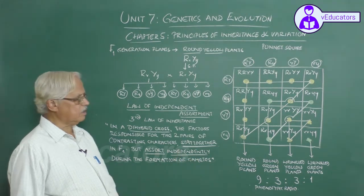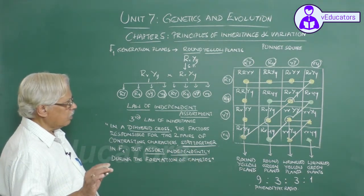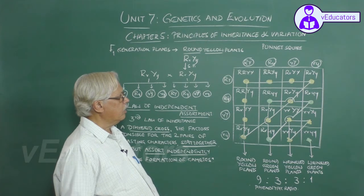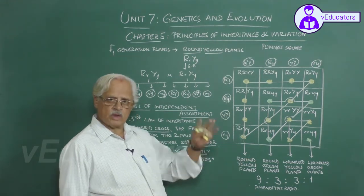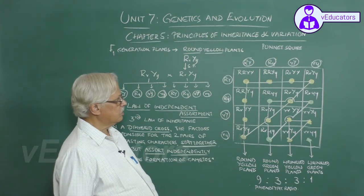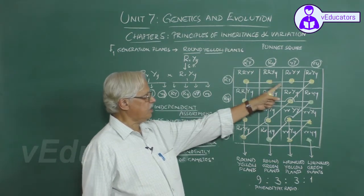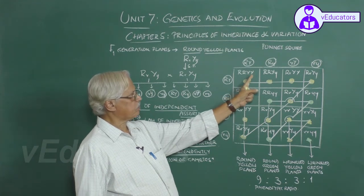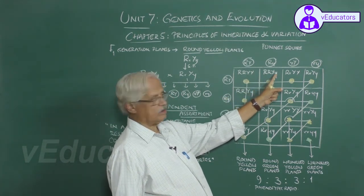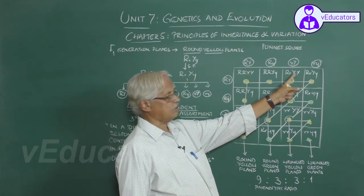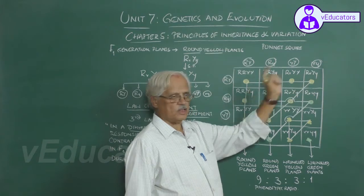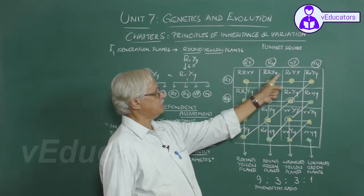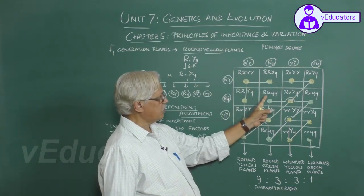This is the law of independent assortment. Now look at this situation. Here we have written only the phenotypic ratio. Is it possible to write a genotypic ratio? It is possible, but it will be very long. Take for example the round yellow plants — there are nine. One is homozygous for round and homozygous for yellow; one is homozygous for round and heterozygous for yellow; one is heterozygous for round and homozygous for yellow. So in the round yellow plants alone, there are four genotypes. In the round green plants, there are two genotypes.